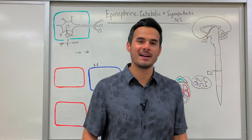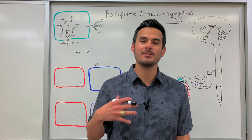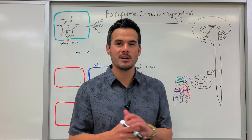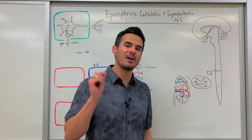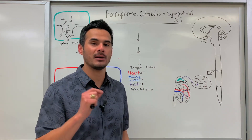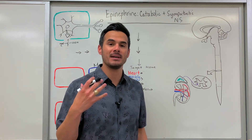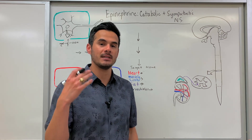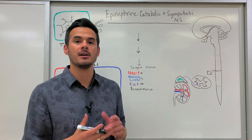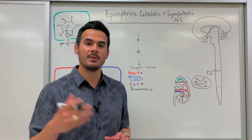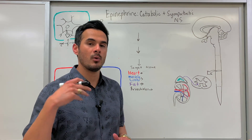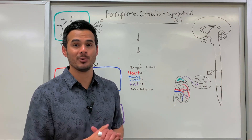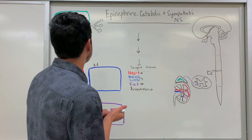Welcome back to Acosta's Anatomy, I'm Travis Ray. In this lecture we're going to discuss epinephrine — what it does, how it's synthesized as a catabolic hormone that mimics the sympathetic nervous system response, what its target tissue is, and what effect it has once it reaches that tissue.